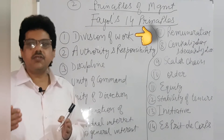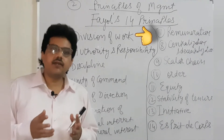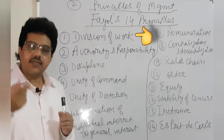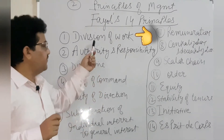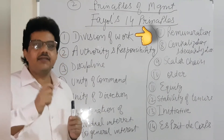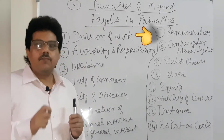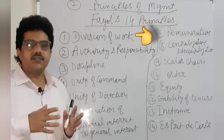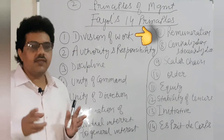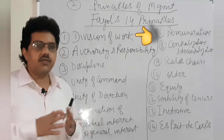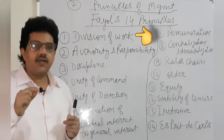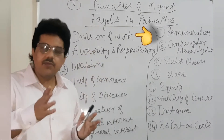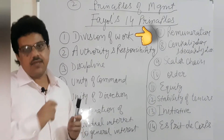So Fayol said that work ka division hona chahiye — only then good output will come. Now students, very important — your course has case studies too, and we will do those separately. But let me give you a hint: in division of work, a case study question can come like — ABC is an organization, Mr. Ajay is the head, but he found targets are not being achieved and only two people have been given all the work. They are facing problems. The question will ask which principle is being violated — the answer is division of work.